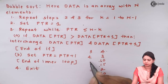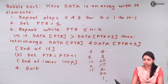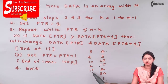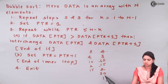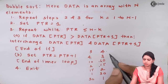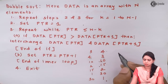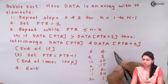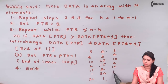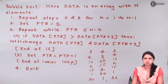Between 15 and 13, there is no need to exchange. Between 13 and 1, my 1 will go up and 13 will come down. So after the first pass I have the list: 3, 4, 10, 2, 15, 1, and 13. The list is still not sorted.